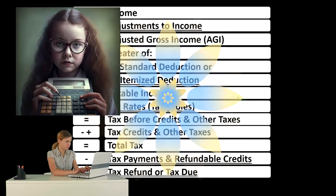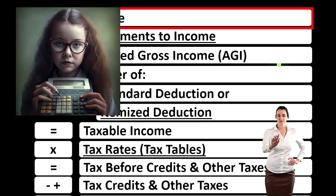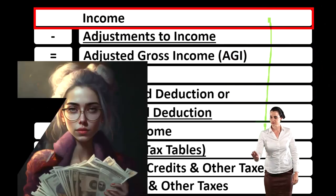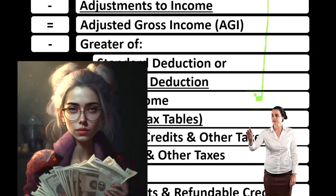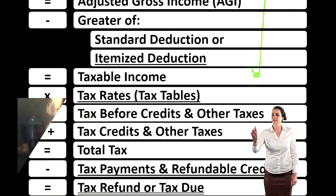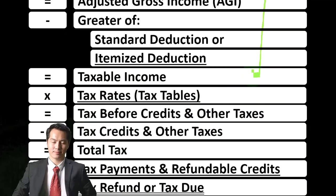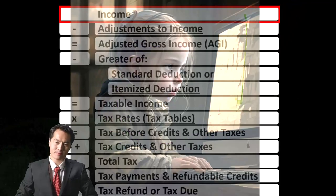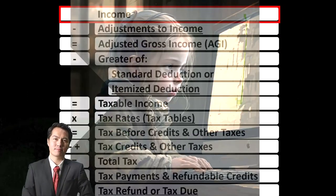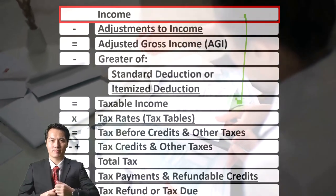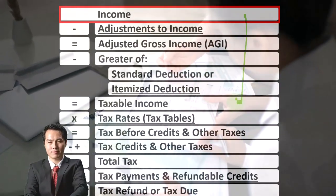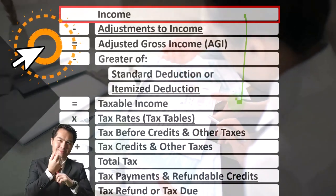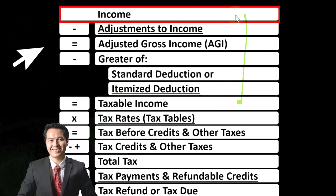Looking at the income tax formula, we're focused on line one, that being income. The first half of the income tax formula is in essence an income statement, although a strange one. This is basically a skeleton format, and a lot of other information would be feeding into it from other forms and schedules — basically representing the first page of Form 1040, where we have an income statement type format starting with the income section.